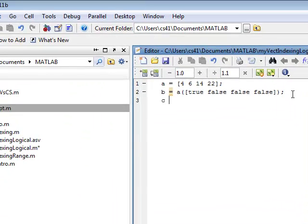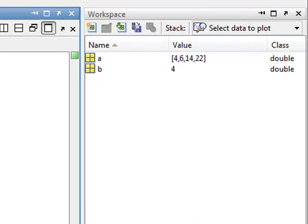If we go up here and do C equals A indexed, let's do a true, false, true, false. So we expect the first and third elements to come through and the second and fourth elements to get blocked. And when we execute this we see that is the case. 4 and 14 get through, the first and third elements, and 6 and 22 get blocked.